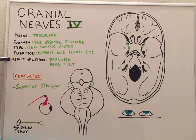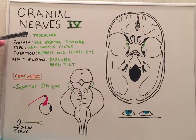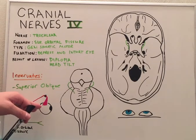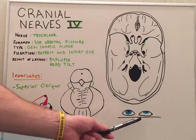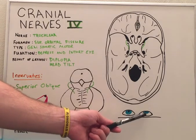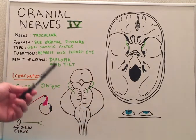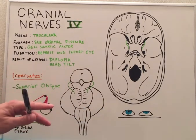A lesion of the trochlear nerve causes diplopia and a head tilt. With such a lesion, the superior oblique muscle becomes paralyzed, leading to elevation of the eyeball, which causes diplopia or double vision.